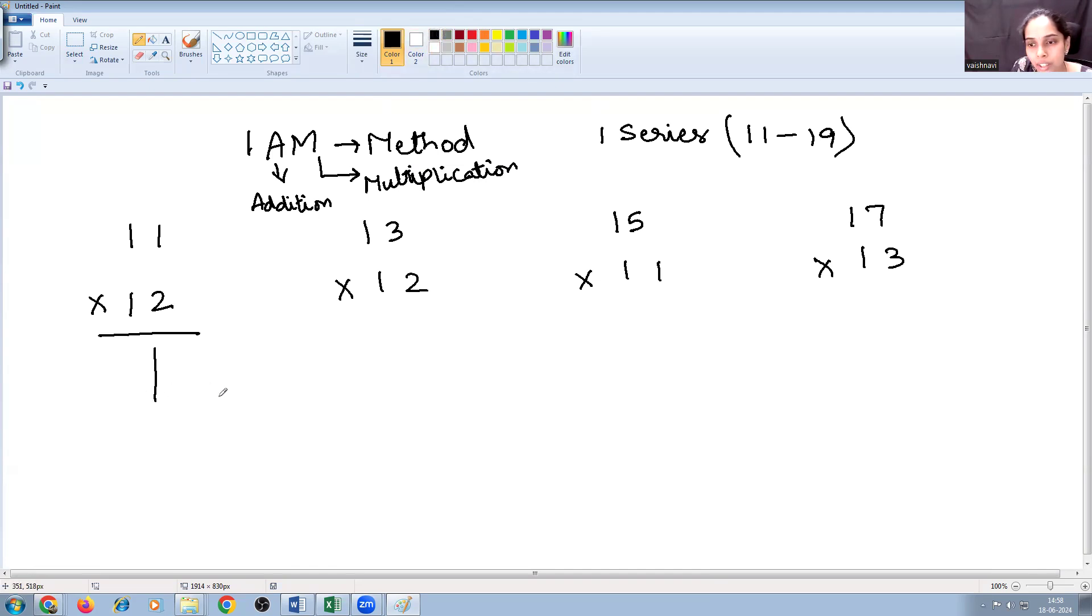One is the LHS and the RHS. So the RHS, the right portion of the answer is procured by multiplying these two digits, the digits which is in one's place. We are going to multiply those two digits and procure it. So 1 into 2 is how much? 2. So now, the LHS or the left part of the answer is procured by adding these digits. So it is 11 plus 2 is what? 13. So your final answer is 132.